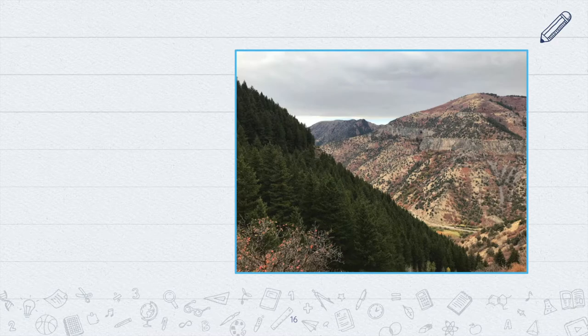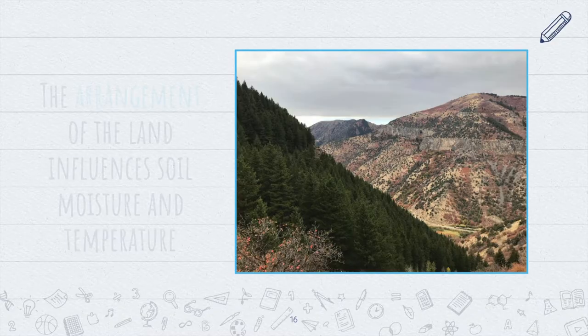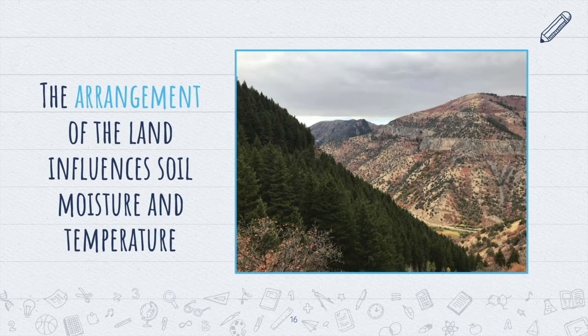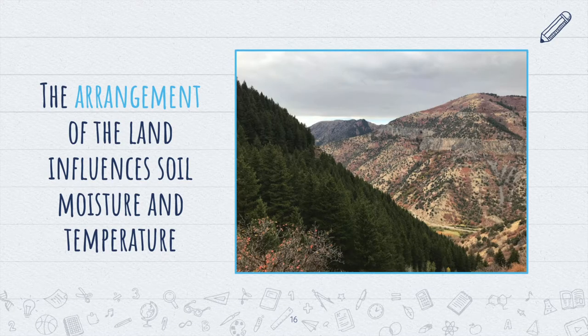Take a look at these mountains. One is full of lush forest while the other looks like a desert on a slope. Because of the arrangement of these mountains, one receives more hours of intense sunlight than the other. The mountain soil with more sun has more heat and less moisture, therefore resulting in a drier soil with lesser ability to support plant growth.